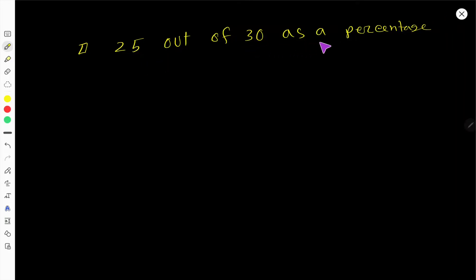25 out of 30 as a percentage. Let us translate: 25 out of means this fraction or division sign, then 30. We need to express this fraction as a percentage. We can rewrite this fraction like this, and instead of 1 we can use 100 over 100.